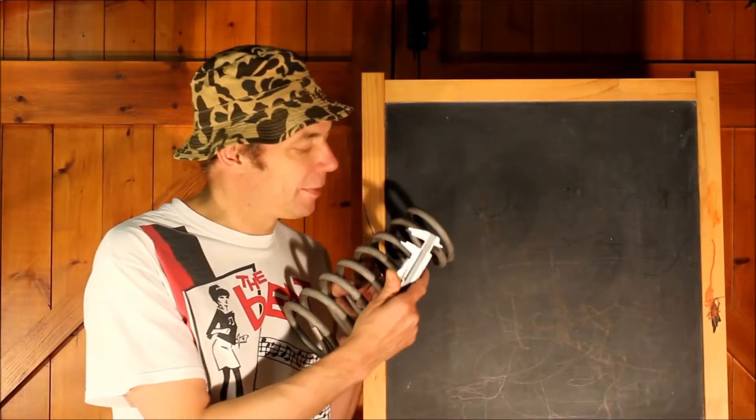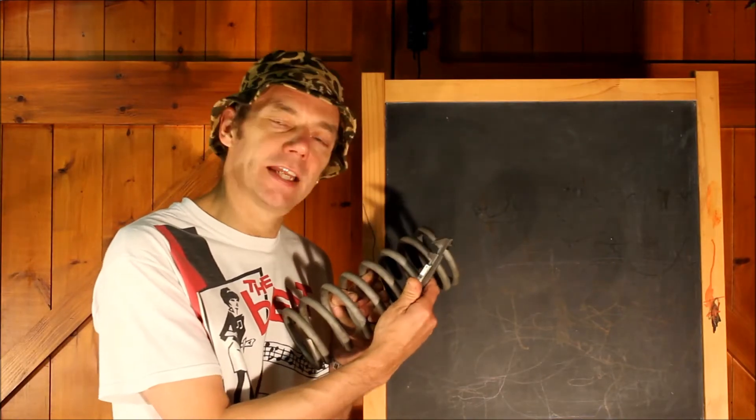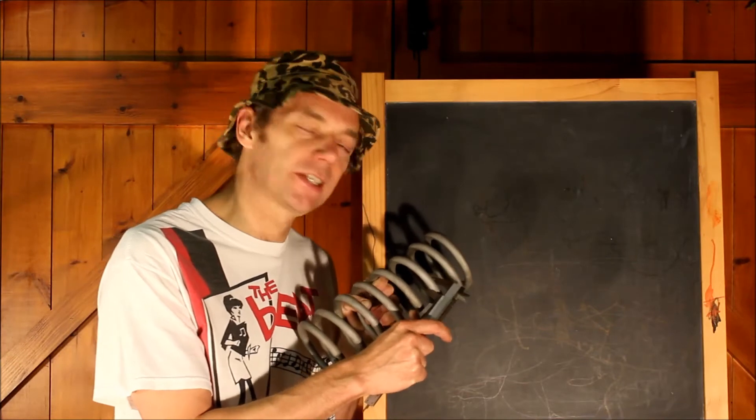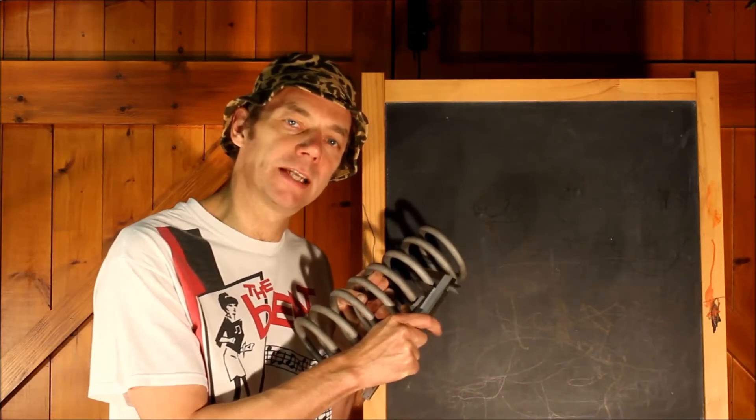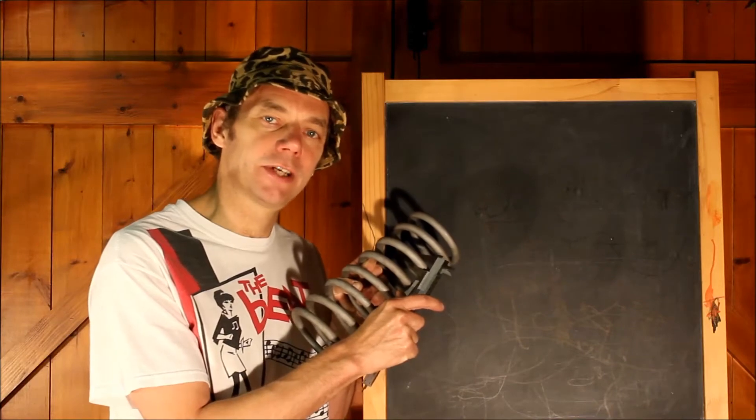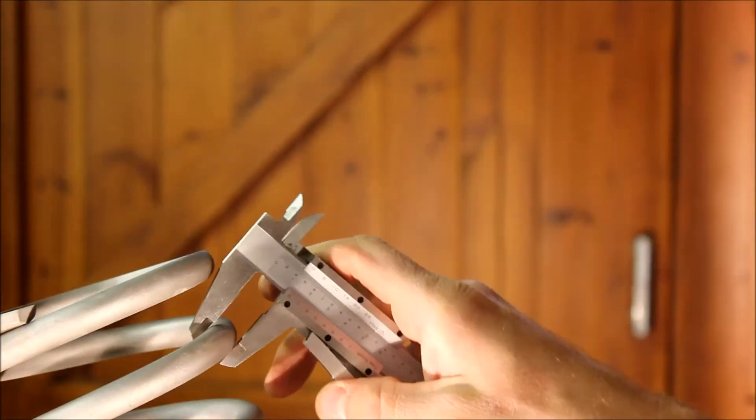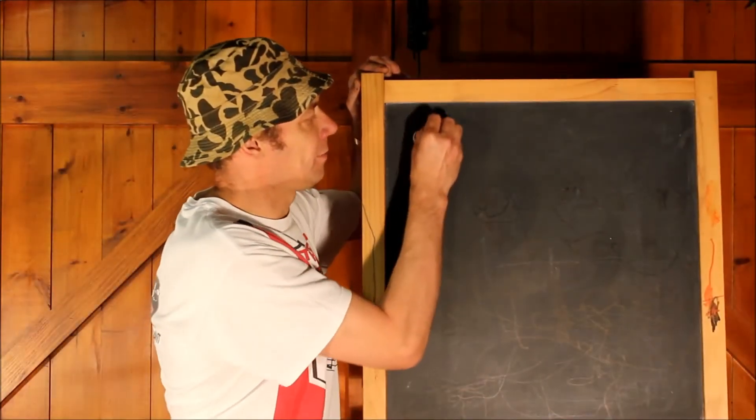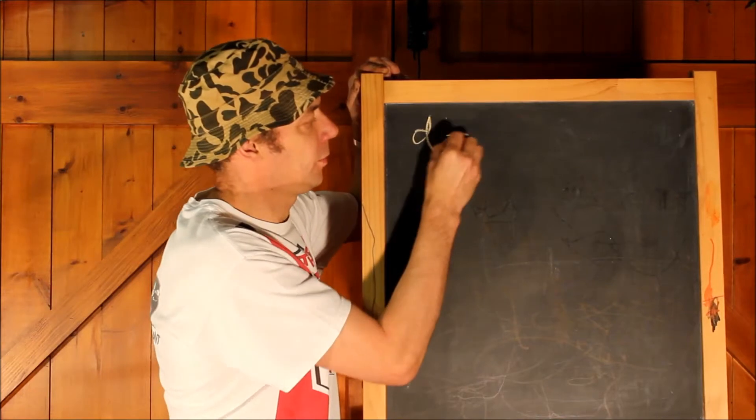The first of those is the diameter of the wire, so clean any rust or thick coatings off so you're back to bare metal, and then use your calipers to measure the diameter of the wire in millimeters. You might want to take a few readings in order to establish an average. For this spring that value is 13.4 millimeters, and then write that value down for use later.